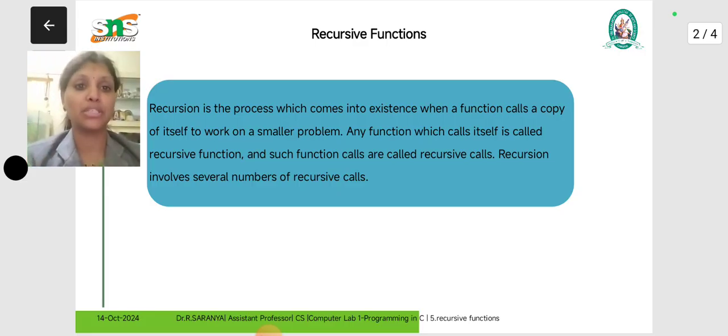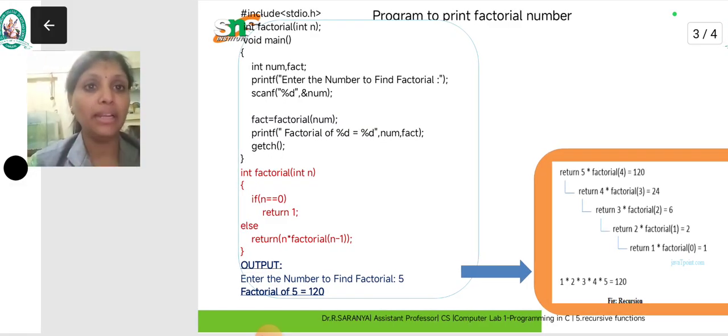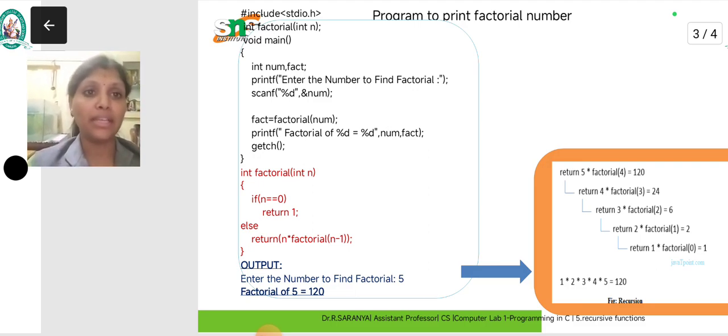First we have to start with header file and then int factorial of int n. This is the declaration. Here integer value, at the same time factorial is the function name. One parameter we specify within parenthesis. So main function, we have the declaration and then logic execution.